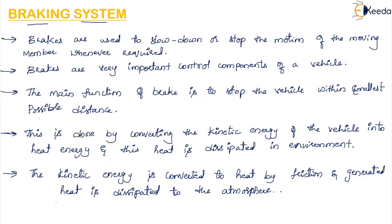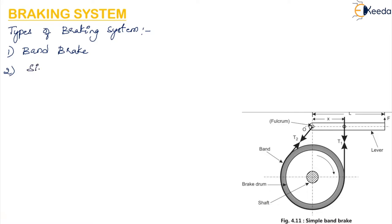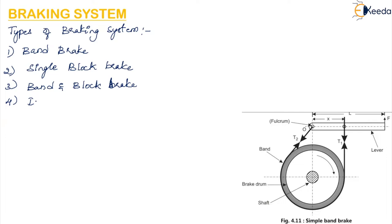There are 5 different types of braking system. The first one is the band brake. The second one is the single block brake. The third one is the band and block brake. The fourth one is the internal expanding shoe brake. And the fifth one is the disc brake.